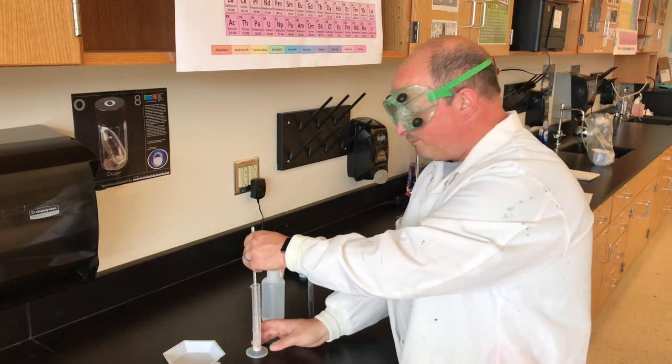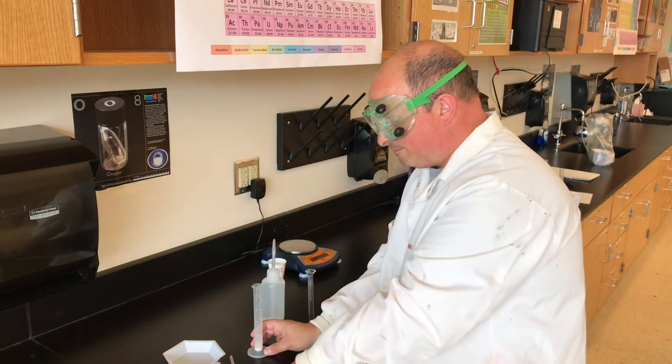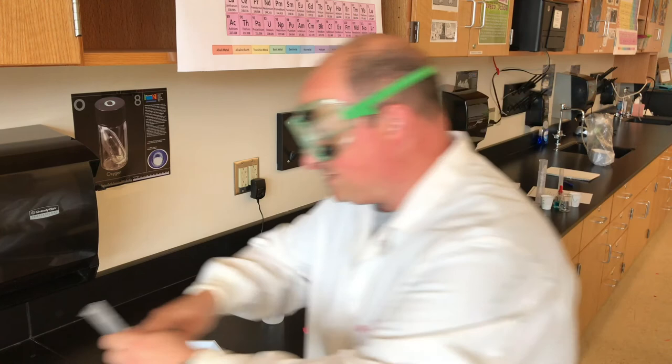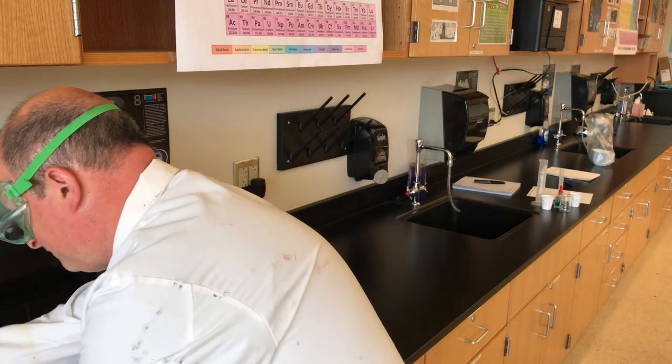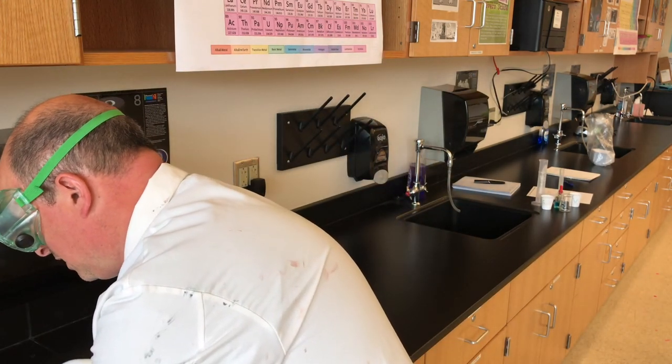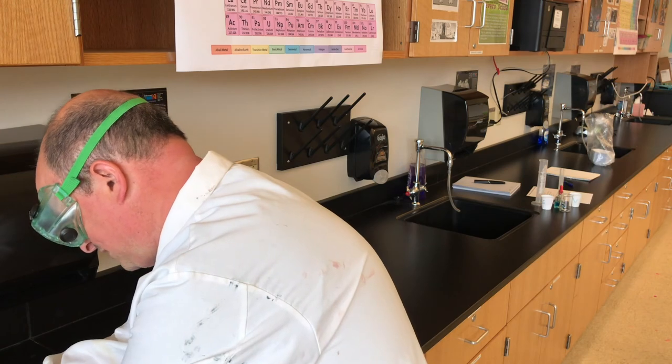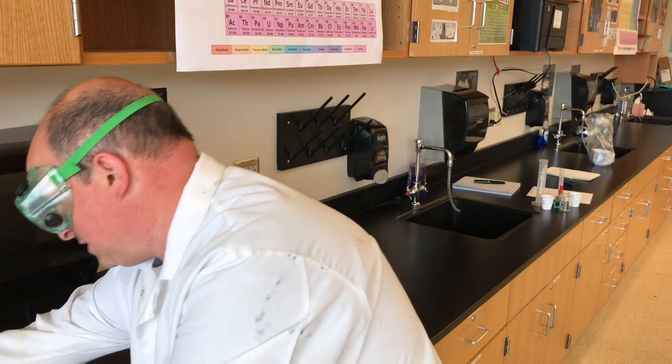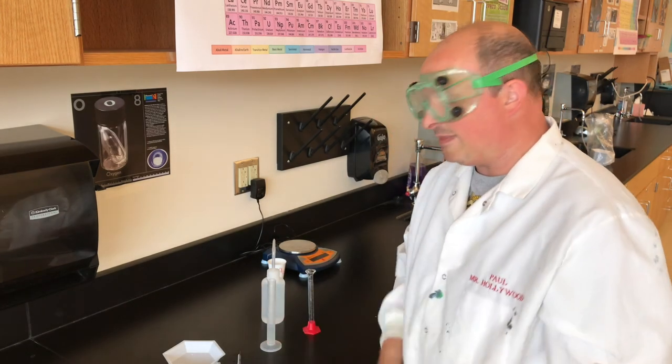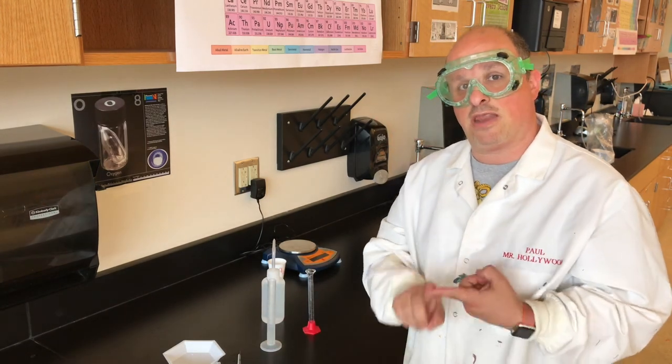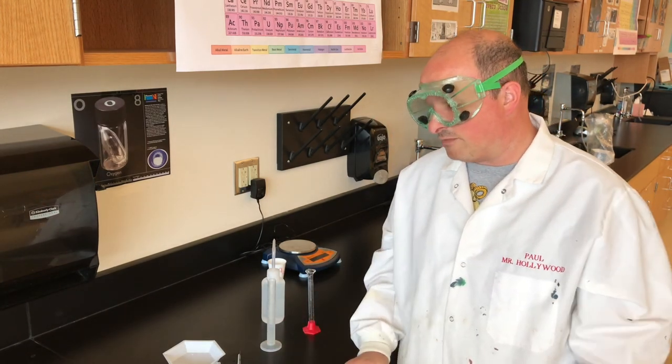Now for cleanup, you take out your thermometer. You take this graduated cylinder, and you pour it down the drain. Use plenty of water to rinse the calcium chloride down the drain. Tap out any excess water, and then repeat the experiment until you run out of time, or until you run out of calcium chloride.